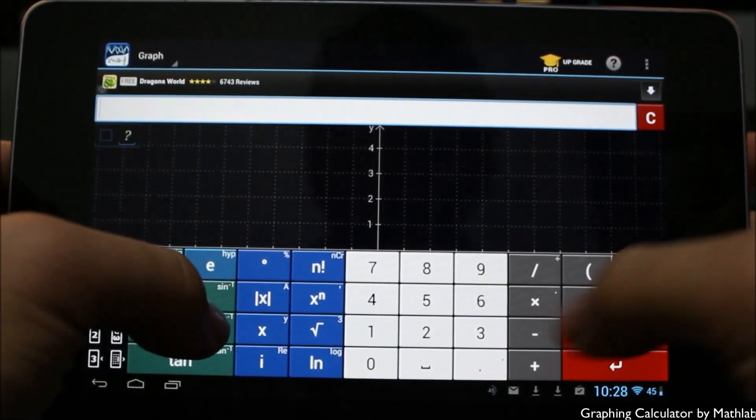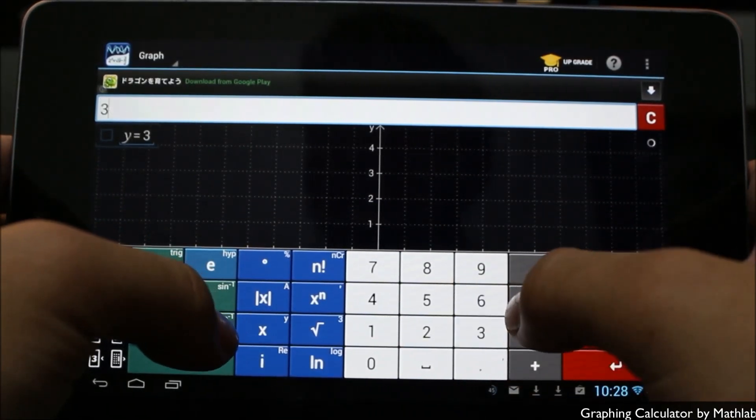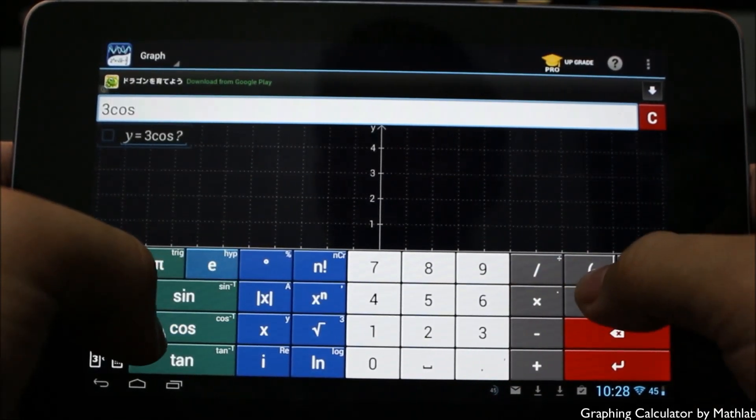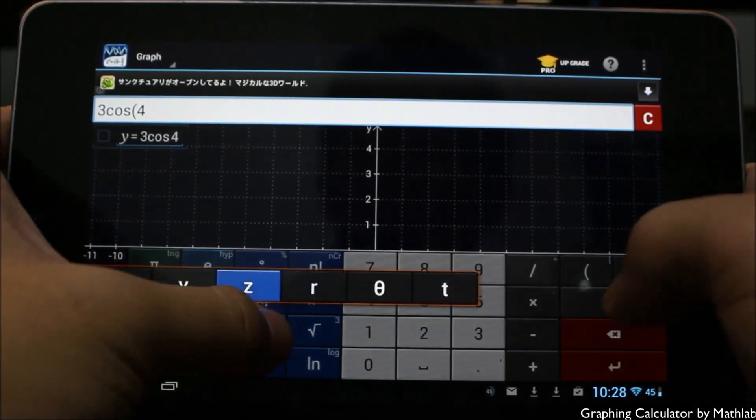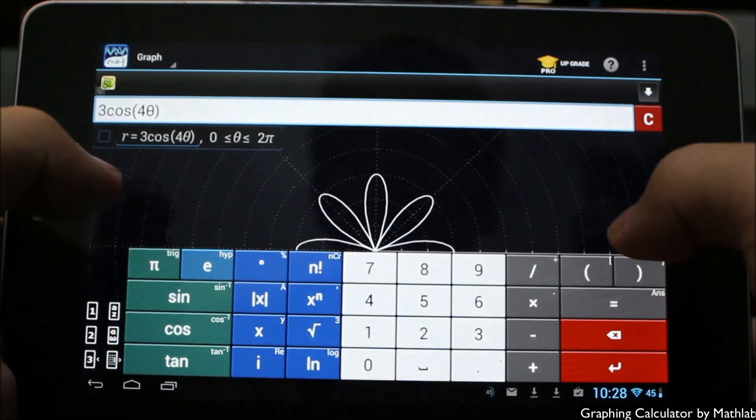So here we are in the graphing mode. We can easily just go ahead and type in 3 cosine, as we go in here, parentheses 4, all the variable, go over here, and you can see as we do that it inputs the graph here.